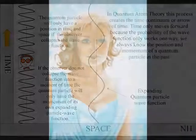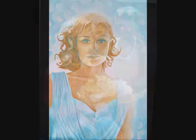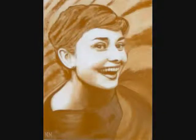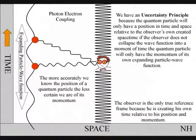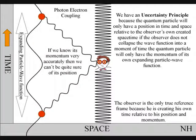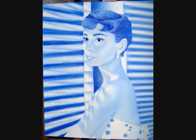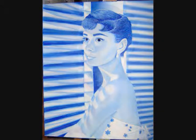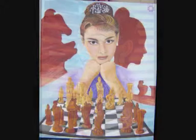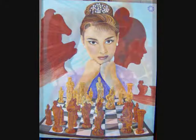At a fundamental quantum level, the observer is the observed within his or her own creative space time. Therefore, the more accurately we know the position of a quantum particle, the less certain we are of its momentum. And if we know its momentum very accurately, then we can't be quite sure of where it is. This is because to observe the quantum particle, we create a photon-electron coupling, collapsing the particle wave function into a new quantum particle in space and a new moment in time that is part of the observer's own created space time.